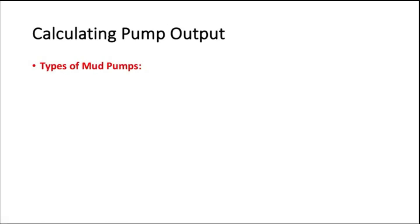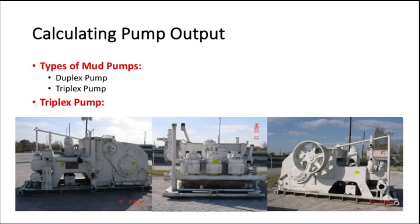One of the most important calculations for mud engineers is mud pump output. The mud pump is a key component of the circulation system — it circulates mud under pressure during drilling operations. Mud pumps are piston pumps with either two or three pistons moving forward and backward inside cylinders called liners. One complete forward and backward cycle is one stroke, equal to one rotation of the crankshaft — so one stroke per minute equals one RPM. Two-piston pumps are called duplex pumps; three-piston pumps are triplex pumps, which are more commonly used today.